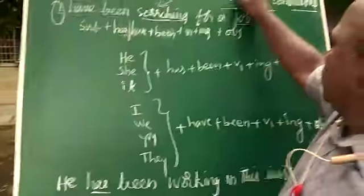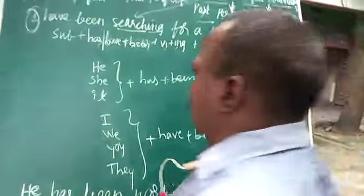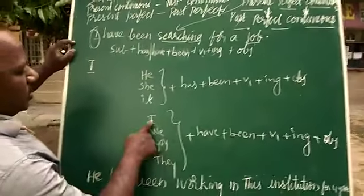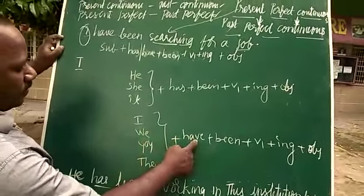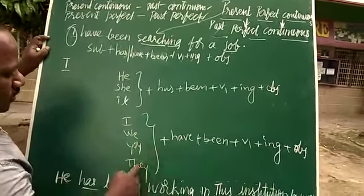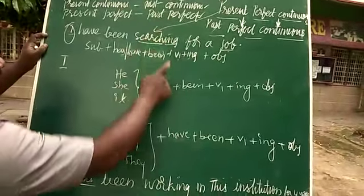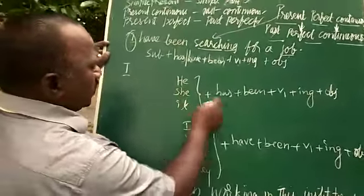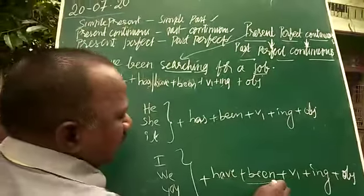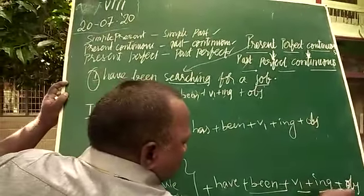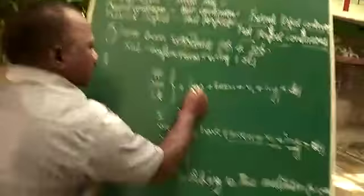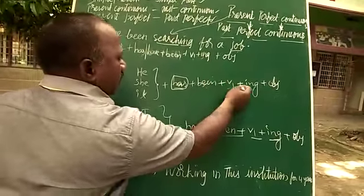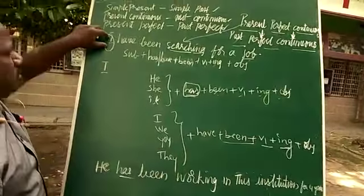So if you want to change this into past perfect continuous, children — I, we, you, they — all these are in present perfect continuous and take 'have'. If you are taking third person singular — he, she, it — you have to take 'has'. The remaining is same: have/has + been + V1+ing + object.